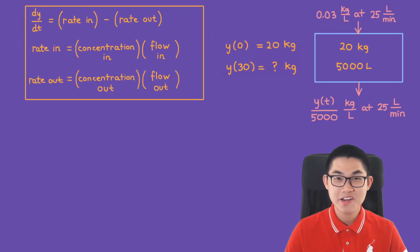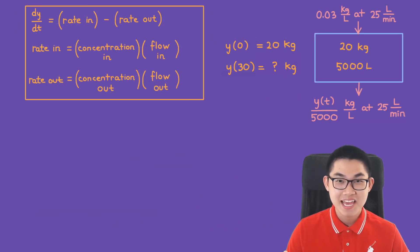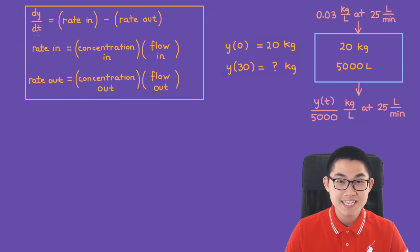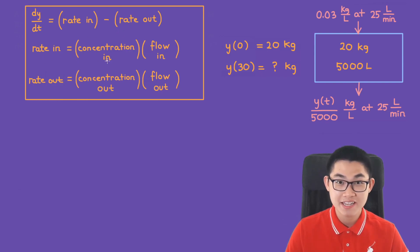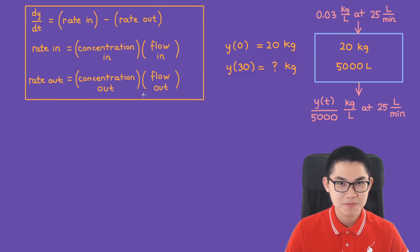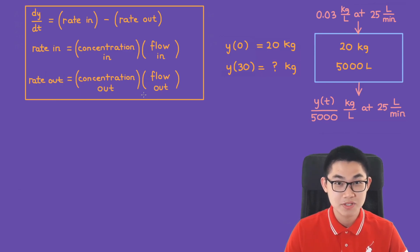There are three formulas you need to know. The first formula is dy/dt equals rate in minus rate out. Rate in equals concentration in times flow in. Rate out equals concentration out times flow out. These formulas are very easy to use.